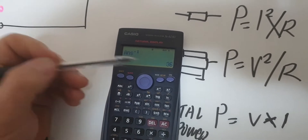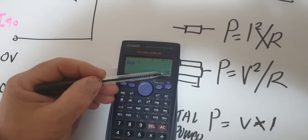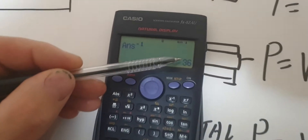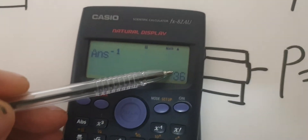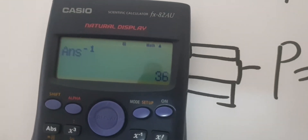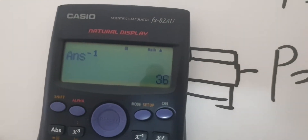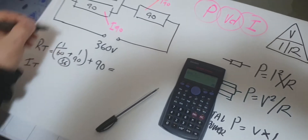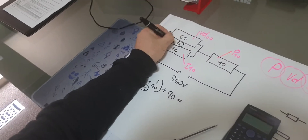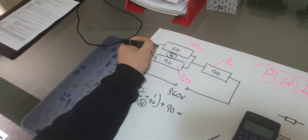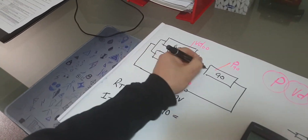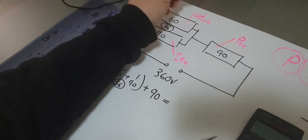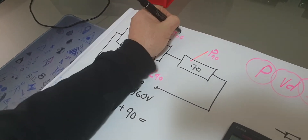I get 36. So 36 ohms is the combined parallel value of those two resistors. Remember: this value has to be smaller than the smallest resistor in the parallel combination — just a simple rule to verify your answer.